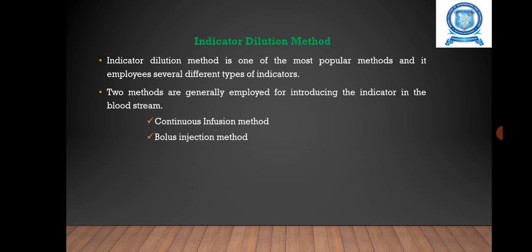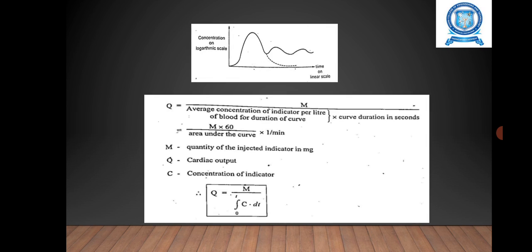The next one is bolus injection method. That means the amount of blood with a known indicator using dye is administered into the circulation. The cardiac output is shown in curve form, and that curve is called a dilution curve.